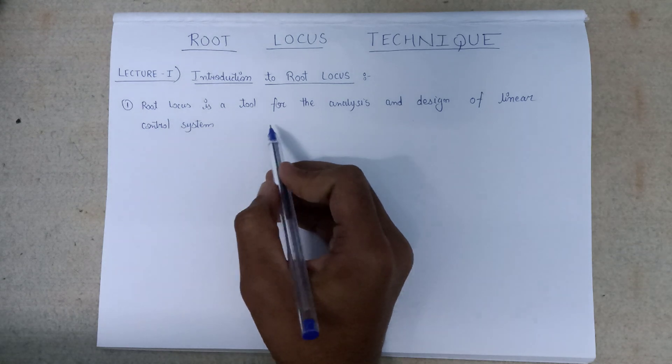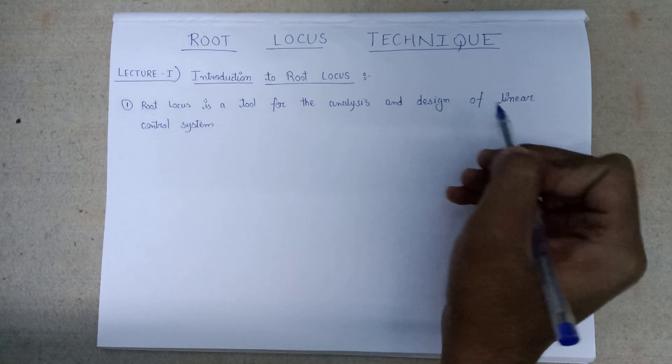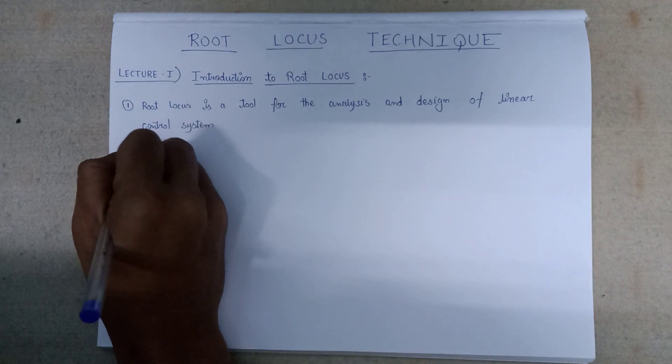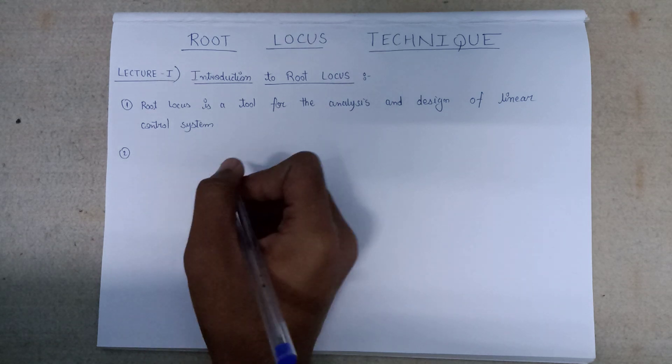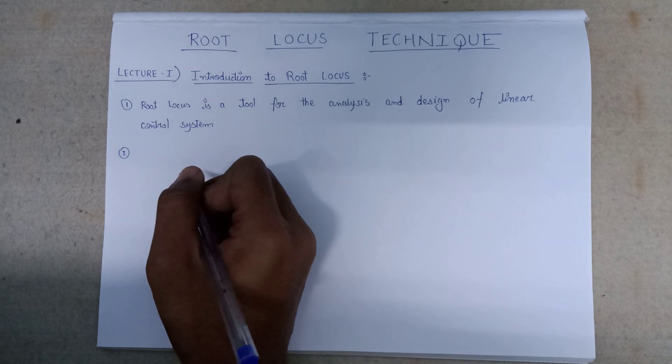So it is just a tool which can be used for analysis and designing purposes of linear control systems. Second one is, Root Locus Diagram is a plot of locus of the roots of characteristic equation with respect to gain.